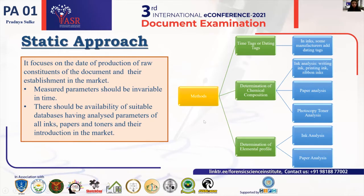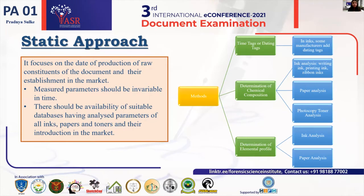The first approach is the static approach. It focuses on the date of production of the raw constituents of the paper or the ink, and when they first came into existence — that is, when they were first introduced into the market. This is done by three techniques: determining the dating tags or time tags, determining the chemical composition, and determination of the elemental profiles. When dating documents using the static approach, there are two prerequisites: the measured parameter should be invariable to time — it should remain static and not change with the time factor — and there should be proper availability of databases so that the observed and analyzed results can be compared.